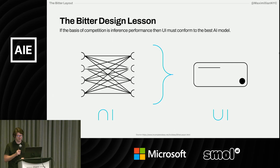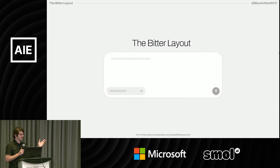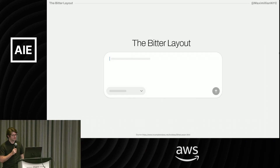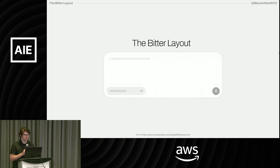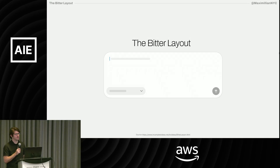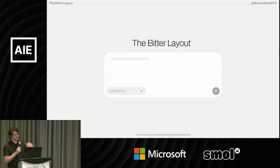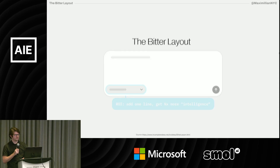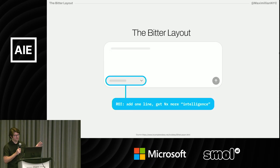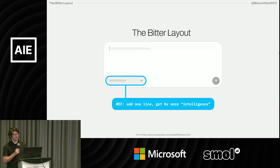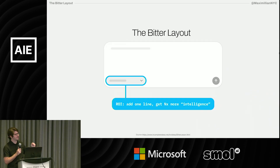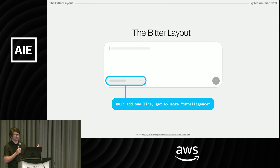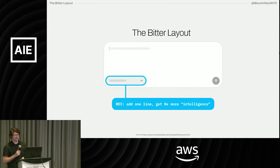So it's kind of a bitter design lesson because you get layouts like this — the bitter layout — pretty uninspiring, not super usable, just not very cool at all. But the one thing this does really well is it can absorb the next model's capabilities. As soon as that next model comes out, jam it into the bitter layout, update your model picker, and your app is more intelligent. I hate this design, but as a designer you can't really hate on this ROI — you just add one line item and now your app is NX more intelligent.